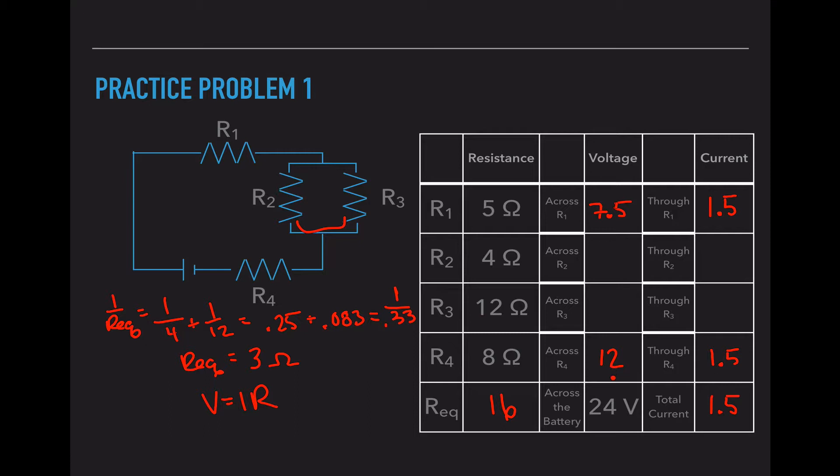So I got 24 volts from the battery. I used 12 at resistor 4. I used 7.5 at resistor 1. So 12 plus 7.5 is 19.5. I've already used 19.5 volts of my energy. Since I started with 24 and I used 19.5, I have 4.5 volts left. So my electrons have to travel through R1. Then they choose R2 or R3. Since the electrons only go through one, both of them must have a voltage drop of 4.5.